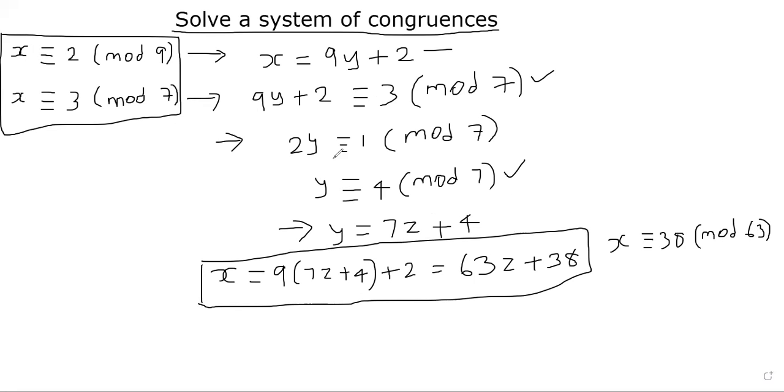I've used some interesting concepts, extended Euclidean algorithm here at this point. Given 2 times y, I need to find a y such that 2 times y is 1 mod 7. Here I use the extended Euclidean algorithm. If you are writing a computer program, you will be calling extended Euclidean algorithm here.